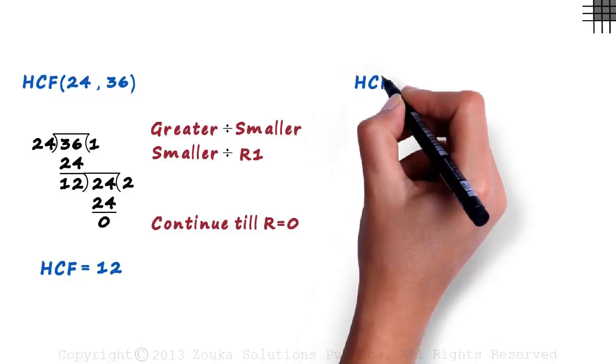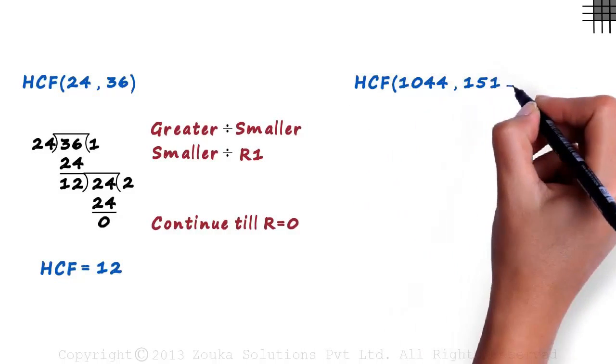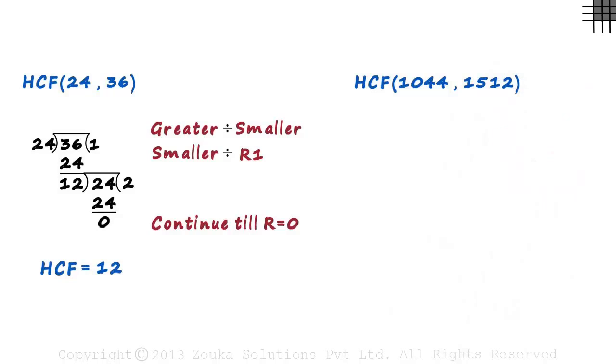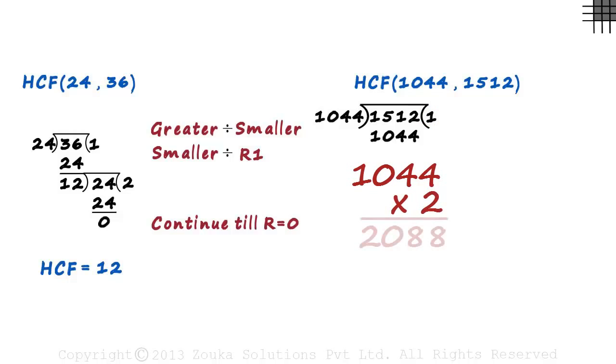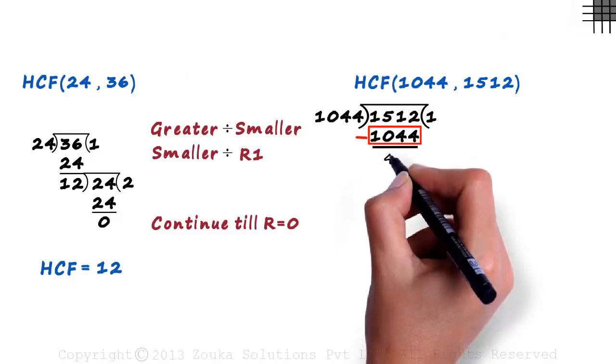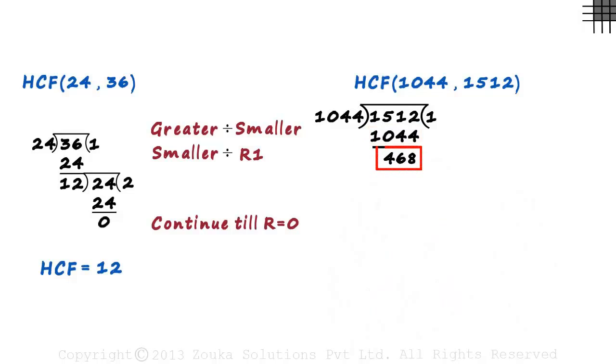We try to find the HCF of 1044 and 1512. In the first step, we divide the larger number by the smaller number. That is, we divide 1512 by 1044. 1044 times 1 is 1044. 1 is the largest quotient possible here, since 1044 times 2 is 2088, which is greater than 1512. And this minus this is 468. This becomes our first remainder.